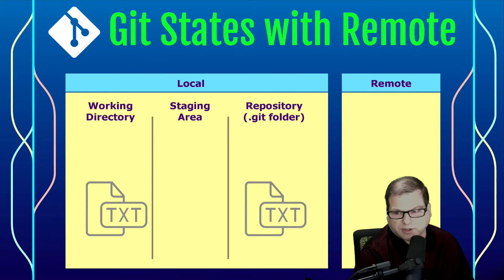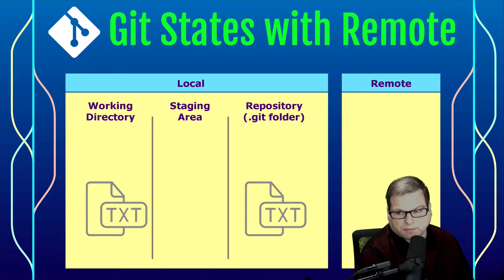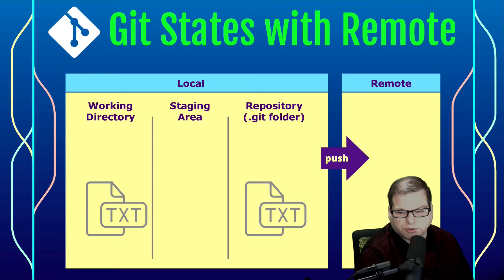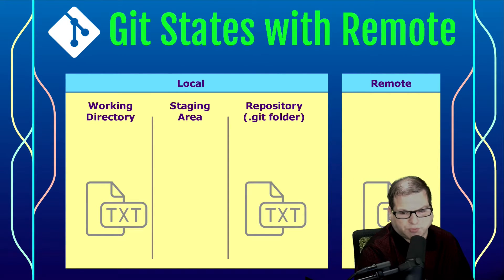Technically, that remote repository has its own three local states, but from a conceptual standpoint, it's a fourth state in the overall process. This is where we're starting out, and then we're going to push up our changes to the remote repository. All the changes we've made on our local system are then reflected on the remote side.